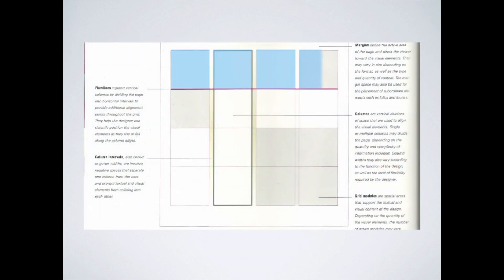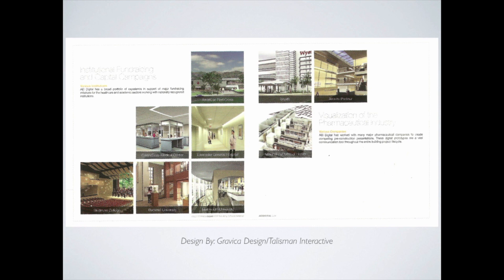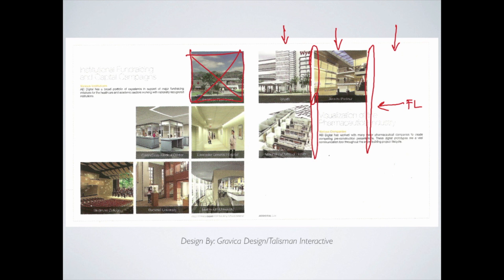These are the grid modules. Each one of these squares is essentially a grid module. Just for review: this is our flow line, these are our columns, there is a third column here even though there's no image. This is our column interval running through like that, and there would be a column interval running through here as well. Our margin is the space outside. Just kind of a summary of everything.